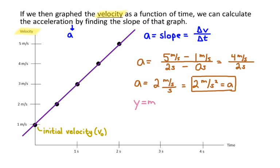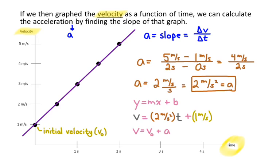We could also write an equation to describe the velocity using y equals mx plus b format. Velocity is on the y-axis, the slope is two meters per second squared, time is on the x-axis, plus the y-intercept of one meter per second. More generally: the final velocity of an object equals its initial velocity plus the acceleration times the time — v = v₀ + at.